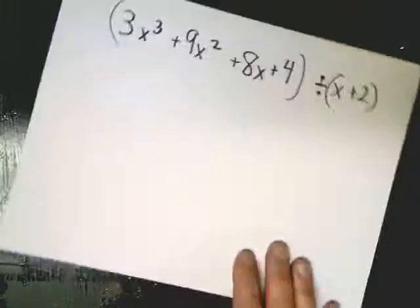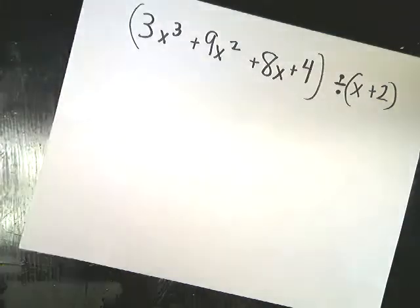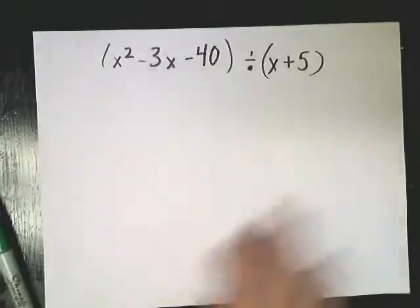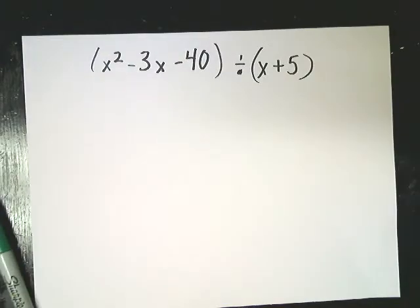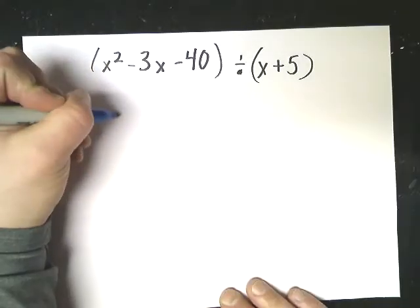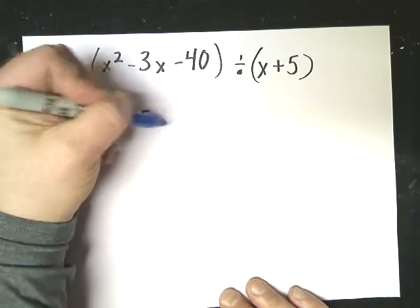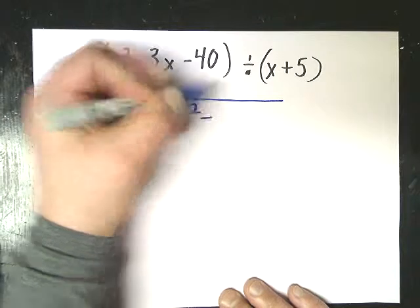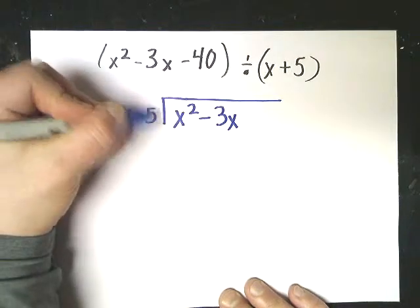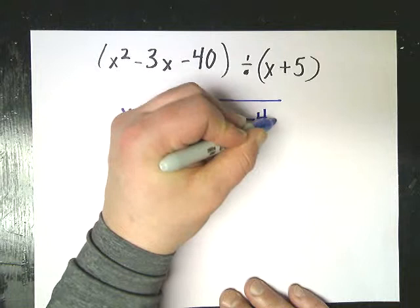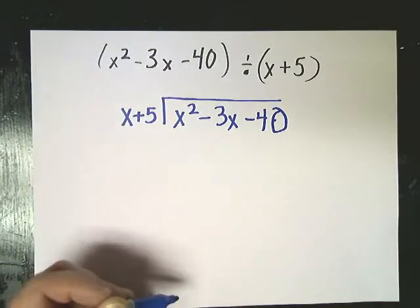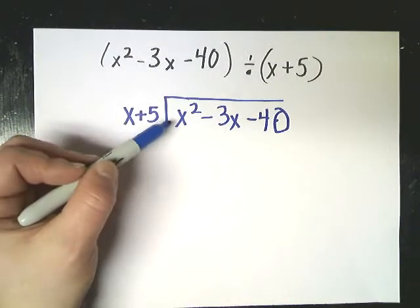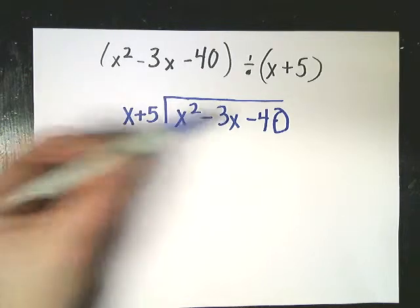Here's what we're starting out with. Actually, let me flip it and start with this one, because it doesn't have a coefficient in front of the x squared. So what I'm dealing with here is x squared minus 3x minus 40 divided by x plus 5. So I'm going to go ahead and put x plus 5 here. I'm going to make my little long division setup.